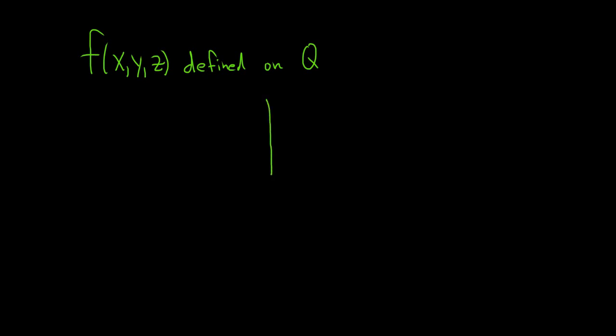So let's look at a picture of Q. So this is the z-axis, this is the x-axis, and this is the y-axis. And so then maybe this is Q here.